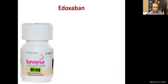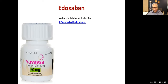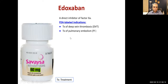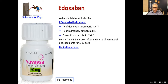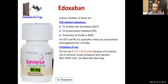Edoxaban is a direct inhibitor of factor Xa. FDA-labeled indications: treatment of deep vein thrombosis, treatment of pulmonary embolism, and prevention of stroke in atrial fibrillation. For DVT and pulmonary embolism, it is used after initial parenteral anticoagulants for 5 to 10 days. It is also a substrate for P-glycoprotein.